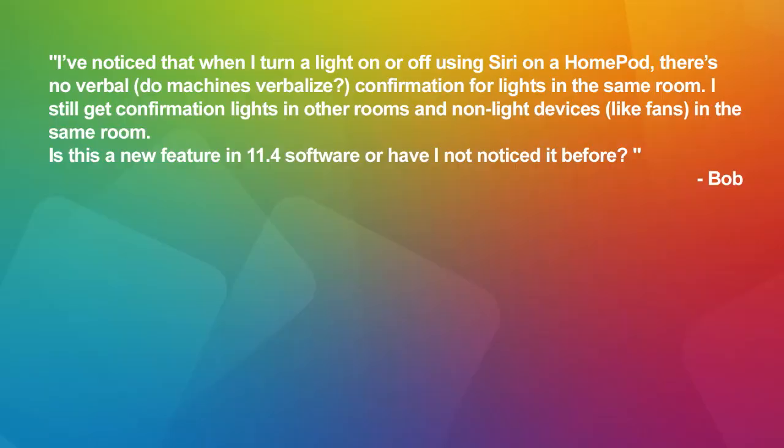Bob from Saint Charles asks: when he turns lights on or off using Siri on his HomePod, there's no verbal confirmation for lights in the same room — but he gets confirmation for lights in other rooms and non-light devices like fans in the same room. Is this a new feature in iOS 11.4 software? Yes — I often use Google or Alexa to turn off my lights with the same command, and she just does it silently.